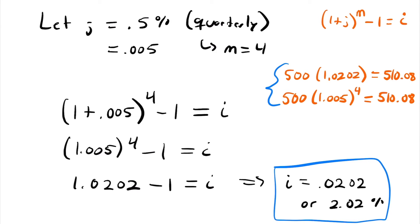If we only put money in for three quarters of a year, we'd have more in the quarterly account since it compounds every quarter while the annual rate hasn't compounded yet. But at multiples of years, they're the same. We learn this because sometimes you'll be given problems where the interest rate isn't yearly, but it would be more convenient to calculate using a yearly rate. One of the hardest skills in this course is accurately converting between different interest rates.